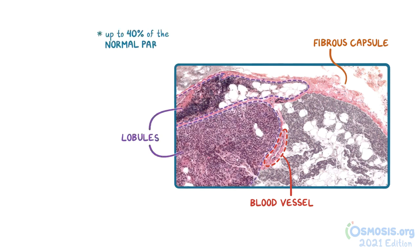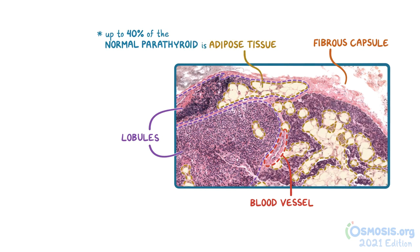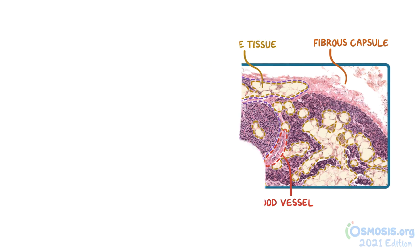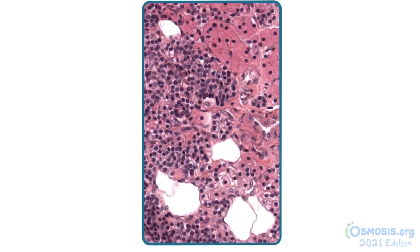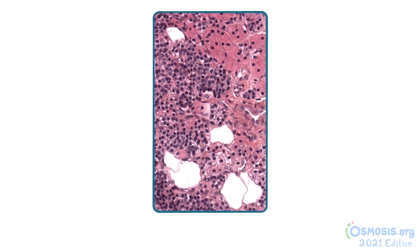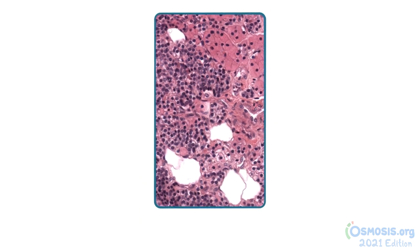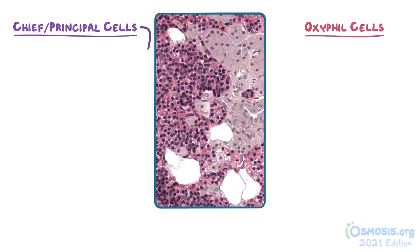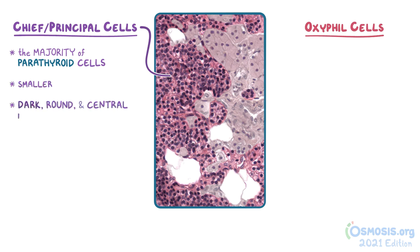Up to 40% of the normal parathyroid gland tissue is composed of adipose tissue. Zooming in closer to a different area of the parathyroid, we can see a lot of the glandular cells. The glandular cells are made of mainly two types: the chief or principal cells, and the oxyphil cells. The majority of the parathyroid cells are chief cells, which are smaller in size, have a dark, round, central nucleus, and a pale cytoplasm. These are the cells responsible for secreting PTH.